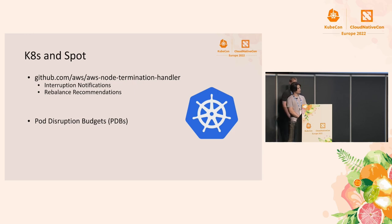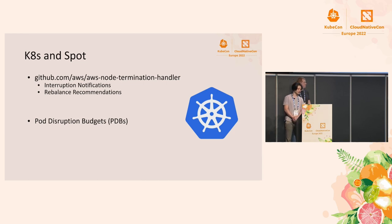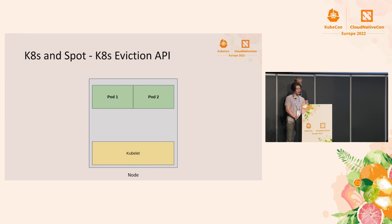There's also an important Kubernetes concept called pod disruption budgets. These are used mostly to ensure that a certain number of replicas on your pods are running at one time. Sometimes if you use pod disruption budgets, you might run into problems when you have Spot instances that need to be cleaned up within two minutes.